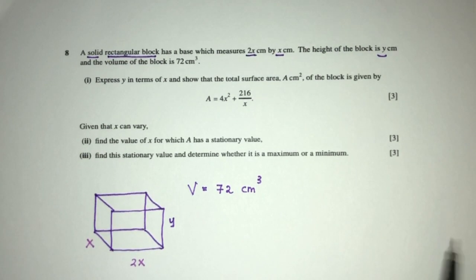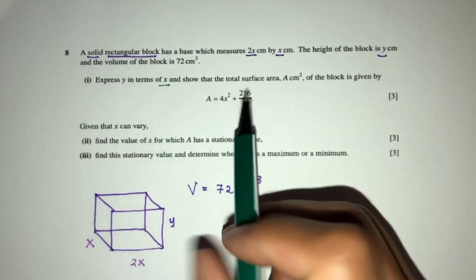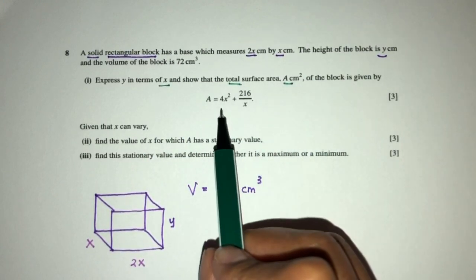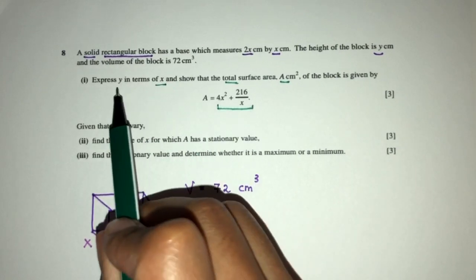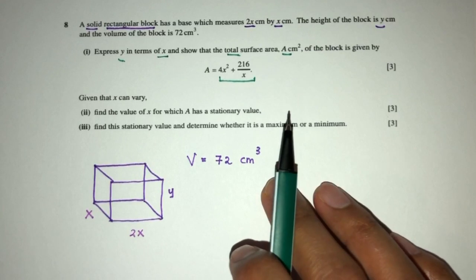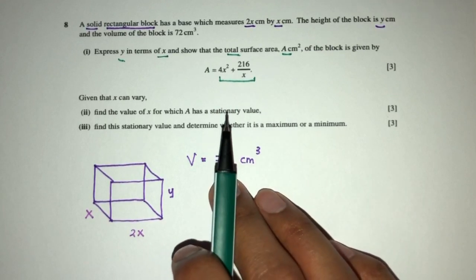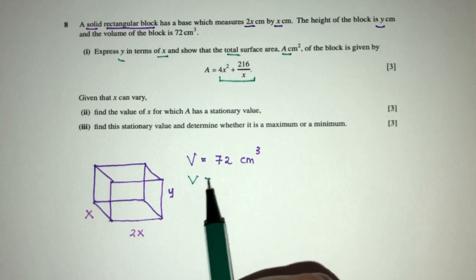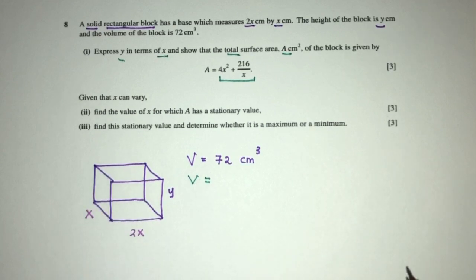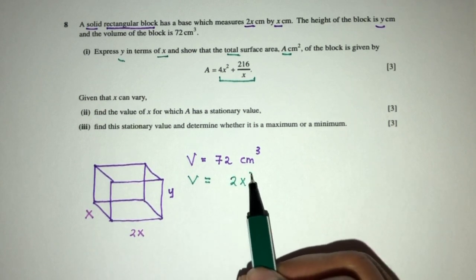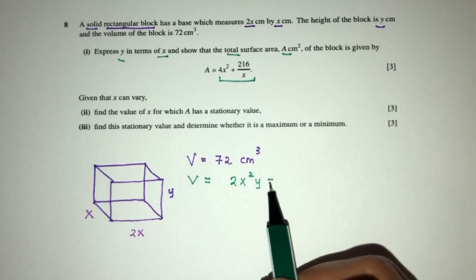Now part one, we have to express y in terms of x and show that the total surface area A is given by this. So one by one. First, express y in terms of x. We have to use this given information that we have here to find y in terms of x. Volume, how would you find volume of this shape? It is going to be length times width times height. That will be x times 2x will be 2x squared and times y. That should give you 72.